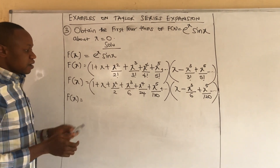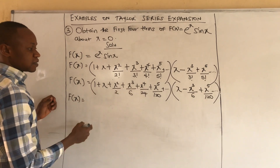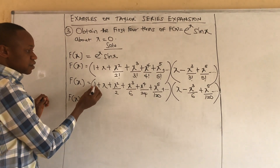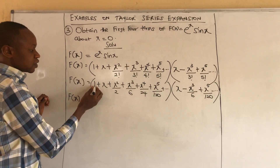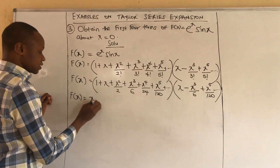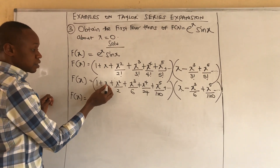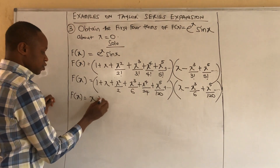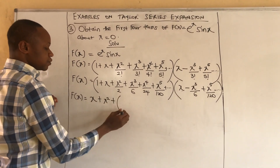We carefully expand according to like powers of x. For x raised to power one, there is only one term: 1 times x gives us x. For x squared, I get x squared only from the first and second terms, giving plus x².